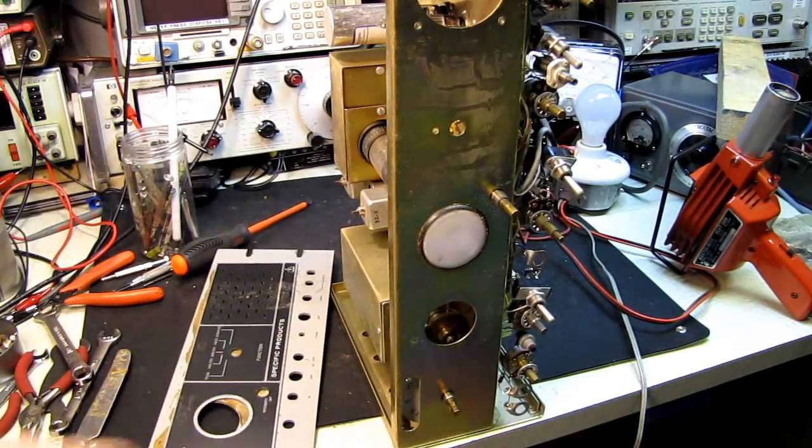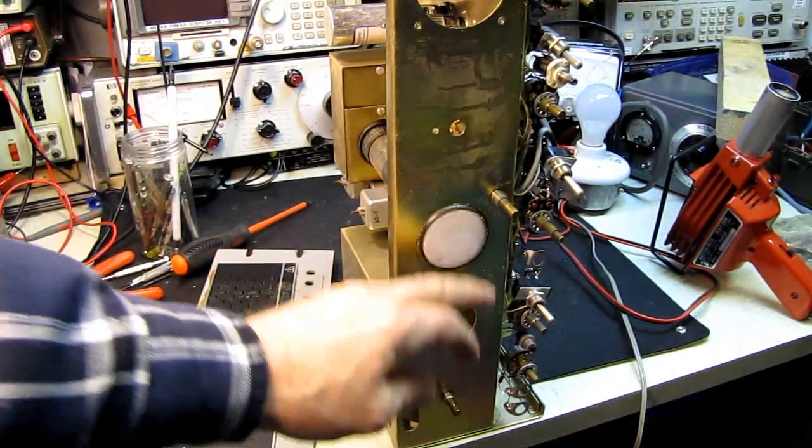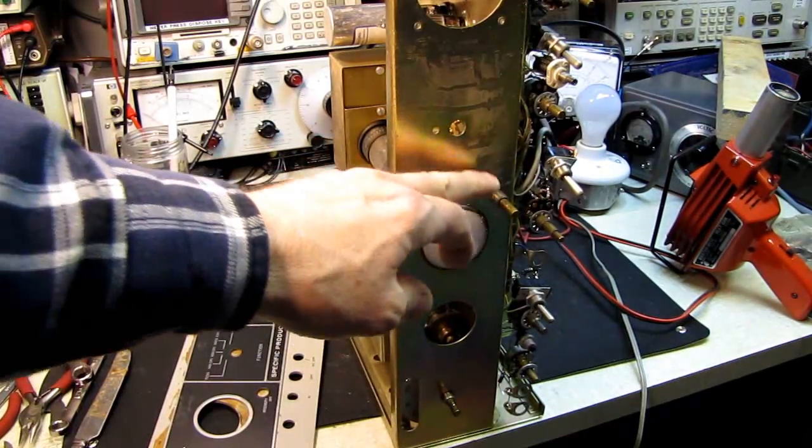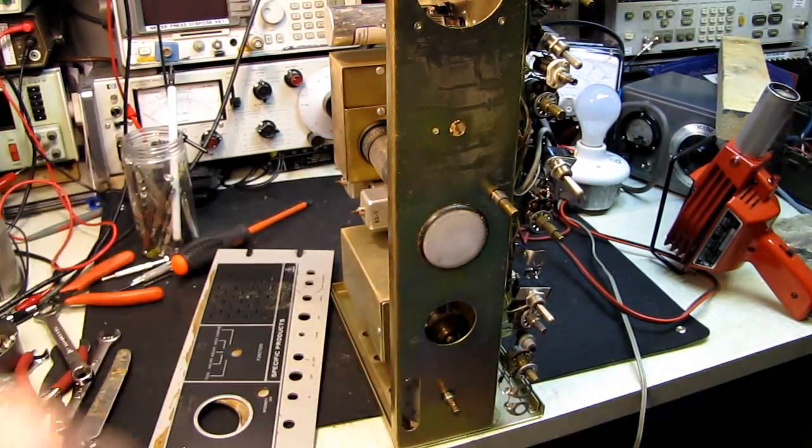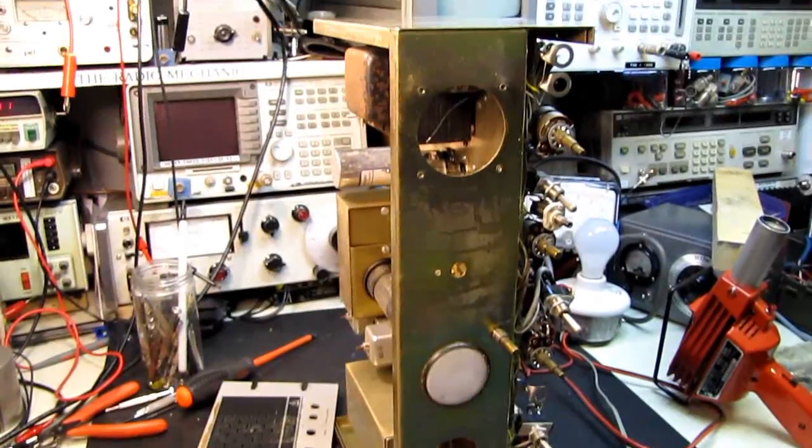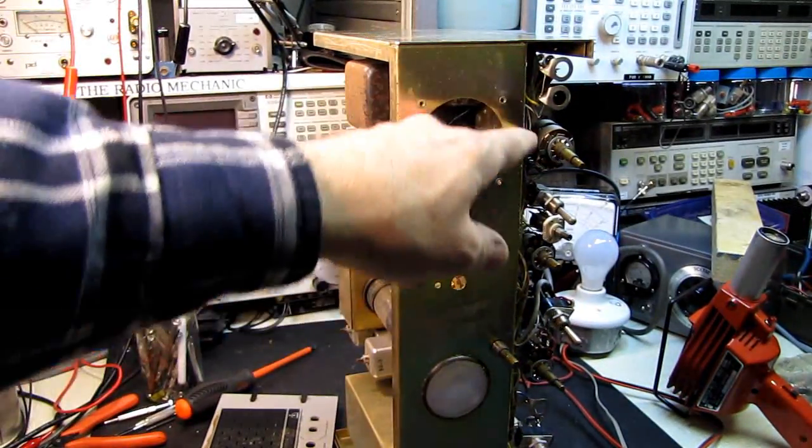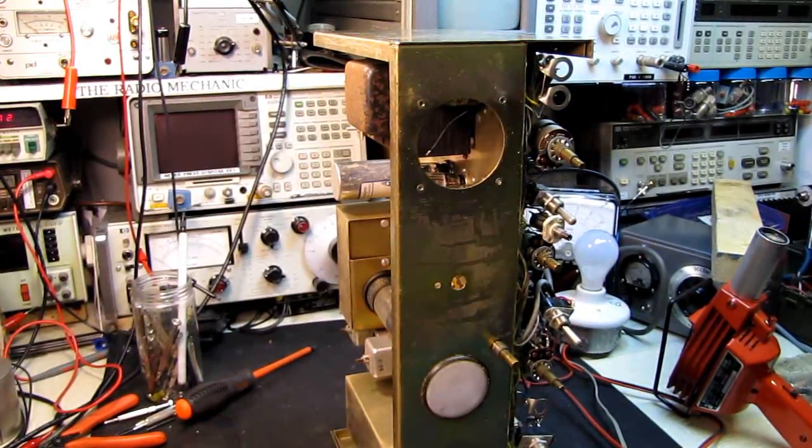The panel itself is held to the front of the unit by three control shafts. One here, one here, one here. And up where the speaker was, there are four screws passed through the aluminum panel and hold it to there.